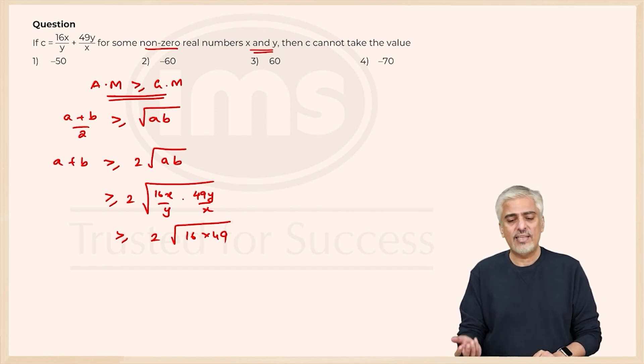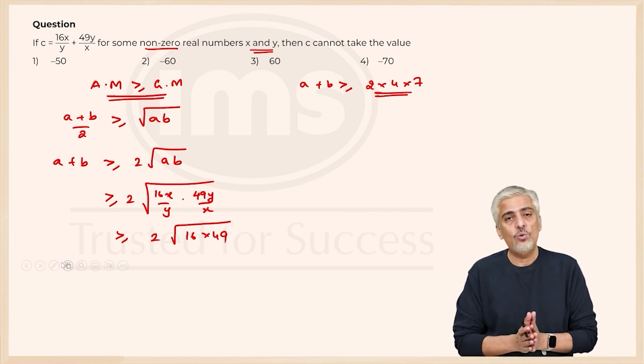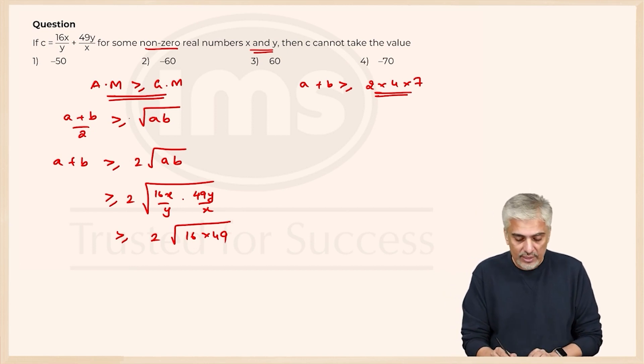Square root of 16 is 4, 49 is 7, so I'll get a plus b has to be greater than or equal to 2 into 4 into 7. So a plus b has to be greater than 56. Now square root could be positive or negative. Right at the start we should have known this could be positive or negative.